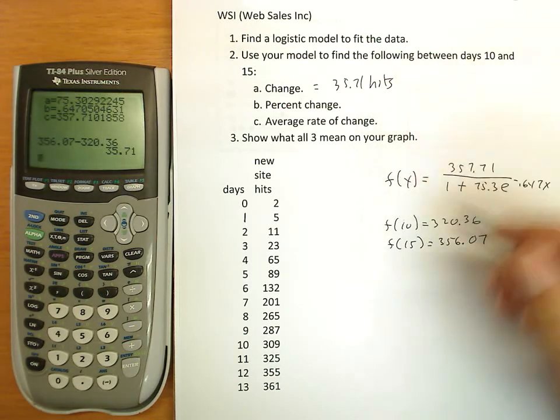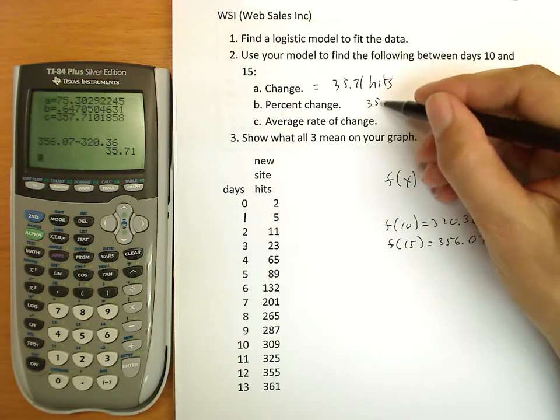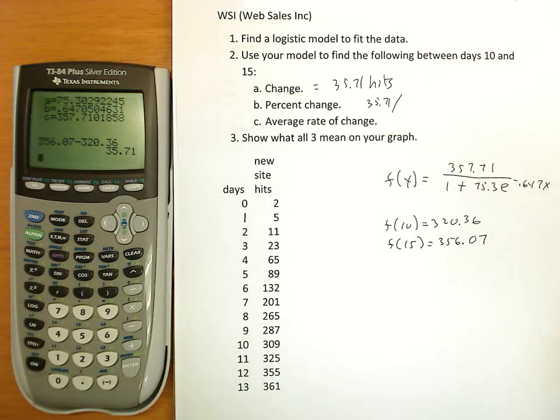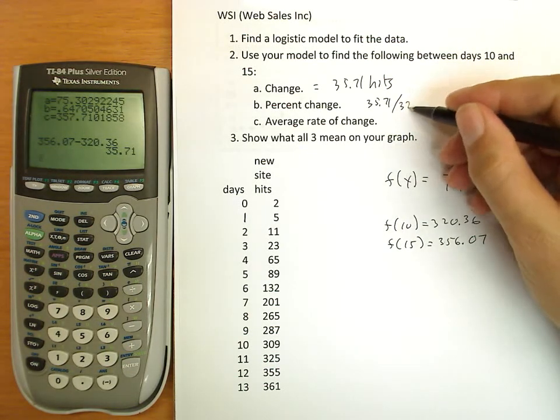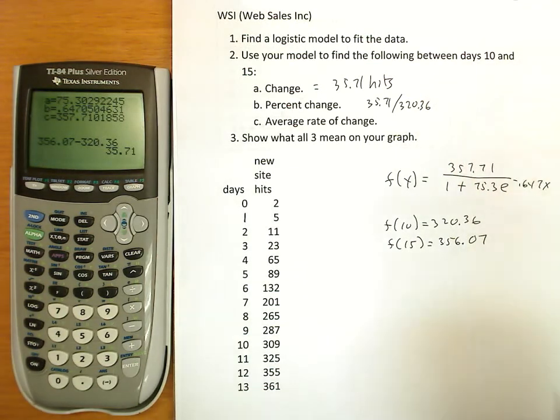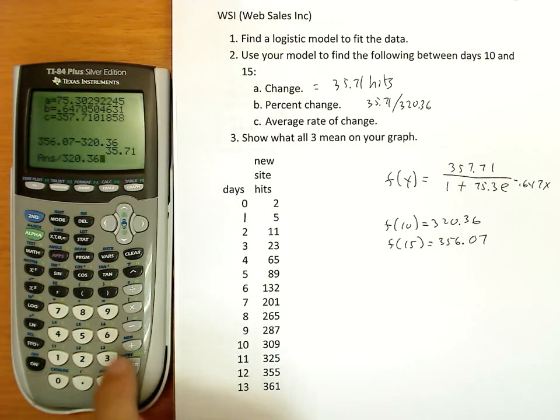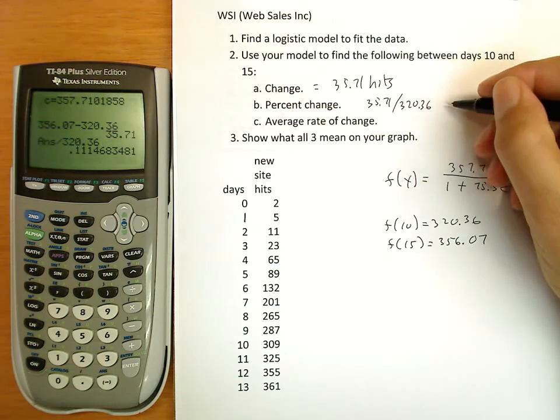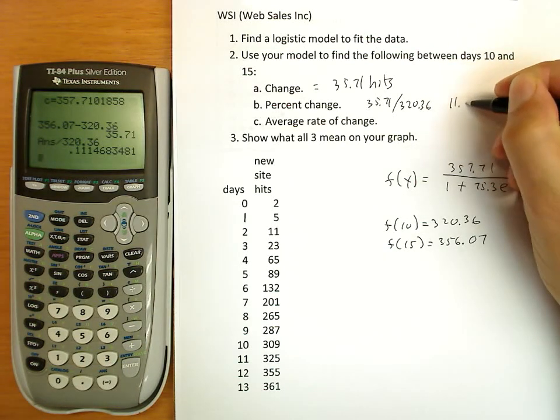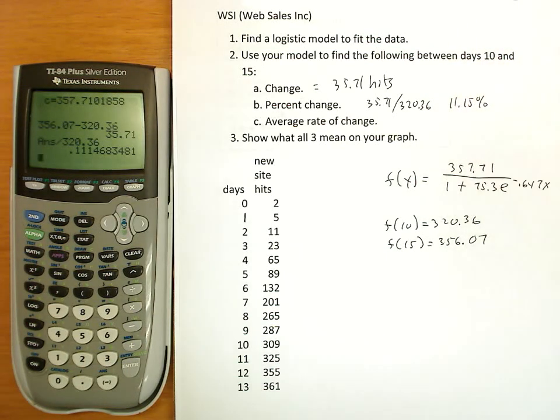Now we're going to analyze that as a percent change. To do that, I simply take 35.71 and divide it by the number that we started with. In other words, day 10, 320.36. I find it went up 0.11 or 11.15 percent. An increase.